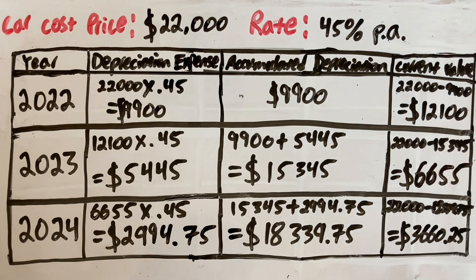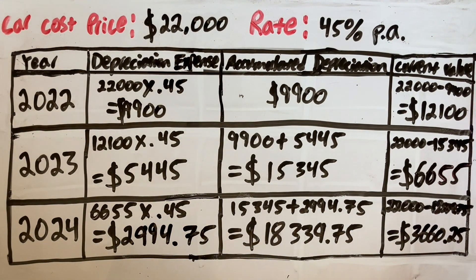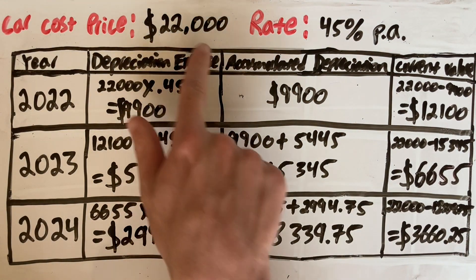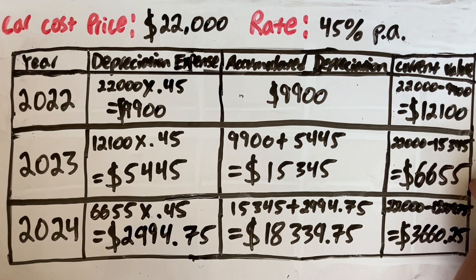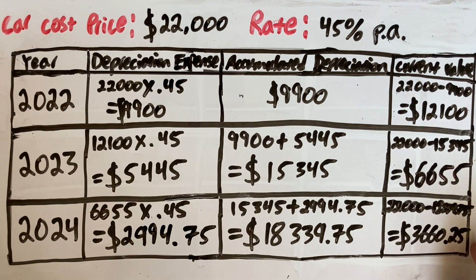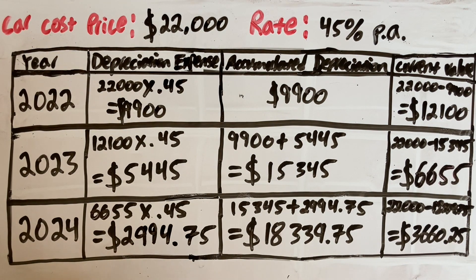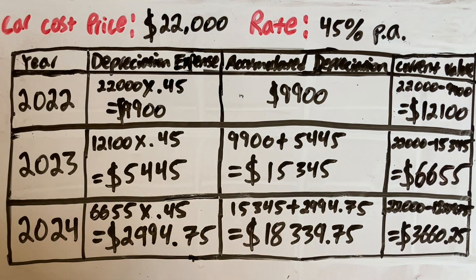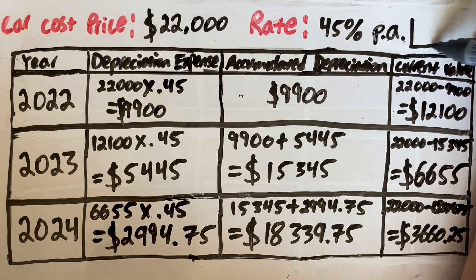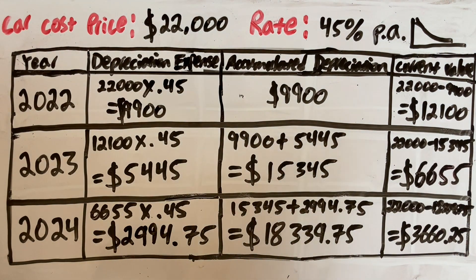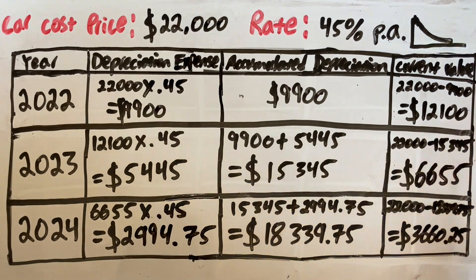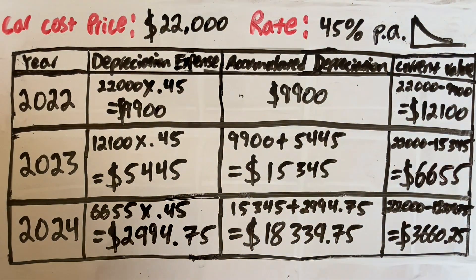And that's how you do the reducing balance method of depreciation. As you can see, each year we had a smaller depreciation expense. That's the goal of the reducing balance method because we're trying to mimic the real life depreciation of our asset, in this case our car, which will lose more money in its early years than its later years. If we show that on the graph, it will look something like this. The graph is a curve like this, where in the early years is where the most of the depreciation occurs, and as the time goes on, it becomes less and less.